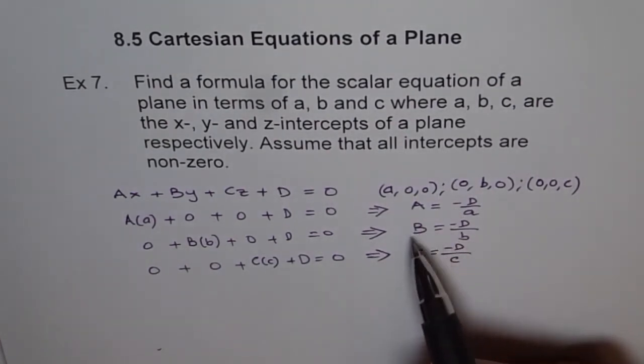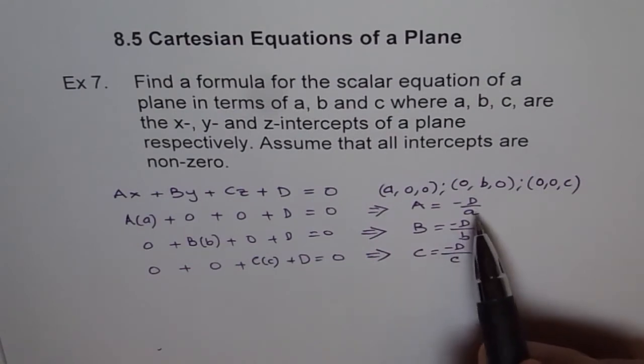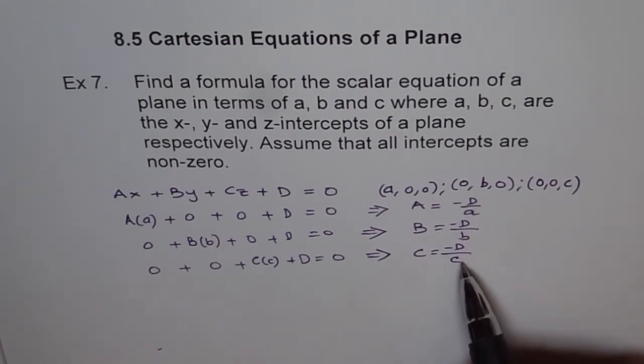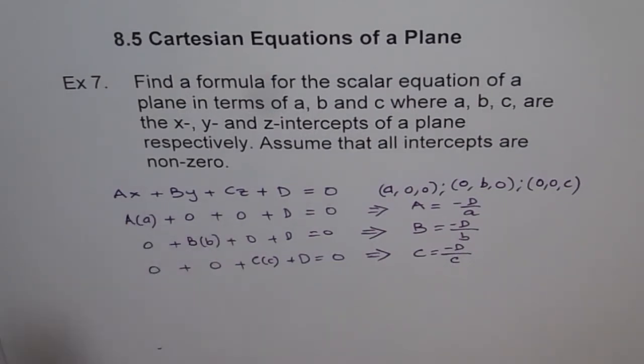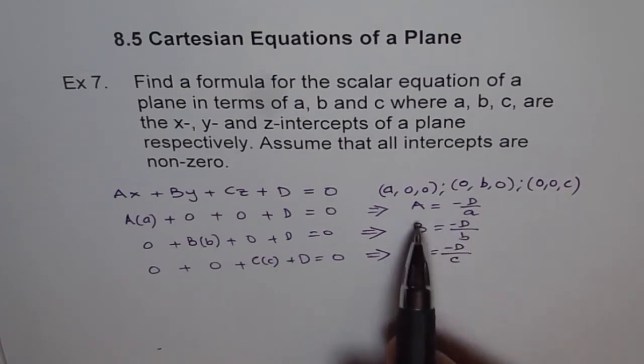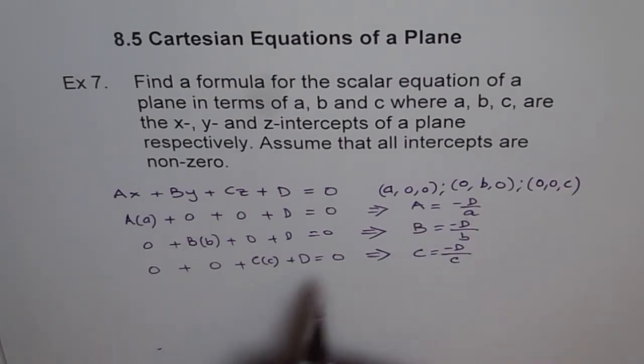So we got some values for our normals A, B, C which is minus D over A, minus D over B, minus D over C. So what we can do is that in our main equation of Cartesian equation, we can always substitute A, B, C with these.